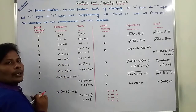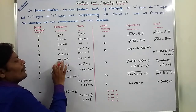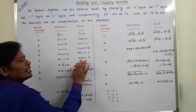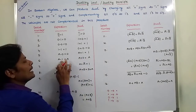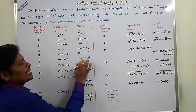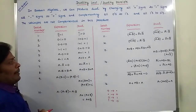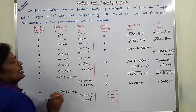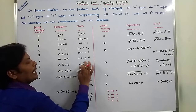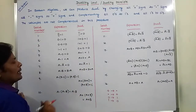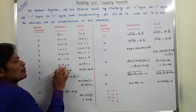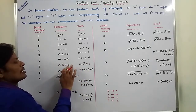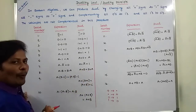A AND one equals A. Here the variable A is not changed. AND sign is changed to plus sign, one is changed to zero — giving A plus zero equals A. Next, A AND Ā equals zero; its dual is A plus Ā equals one. Here A is the same, AND sign changes to plus, Ā complement is the same, and zero is changed to one.